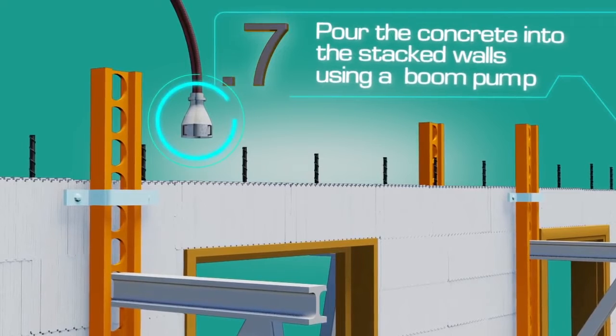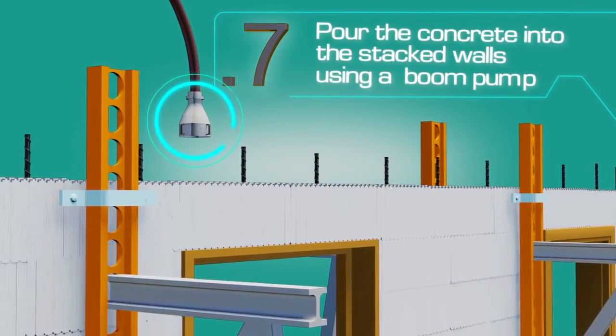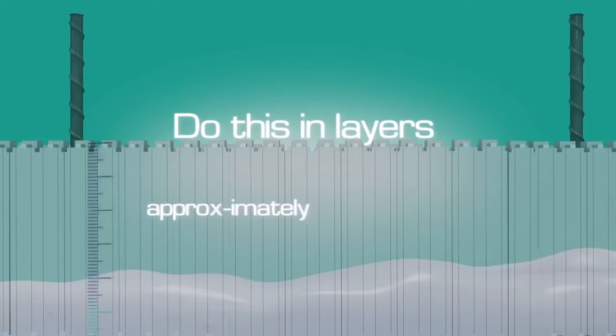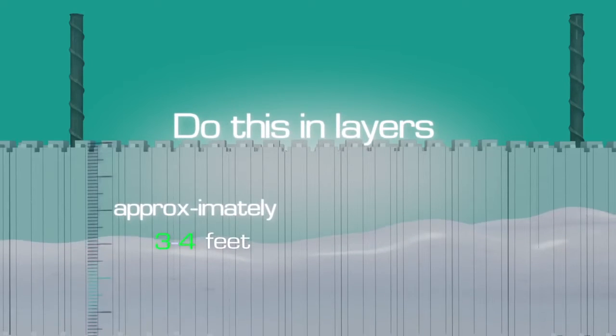Pour the concrete into the stacked walls using a boom pump. Do this in layers, approximately three to four feet at a time, circling the structure until the top of the wall is reached.